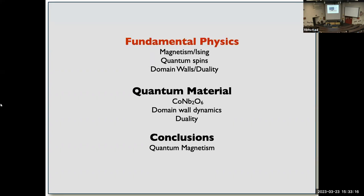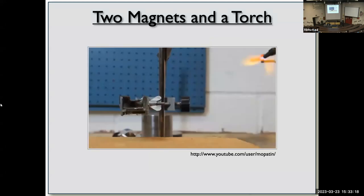Let's begin by watching a video of an experiment that is easy for all of us to appreciate. This experiment was probably done five or six hundred years ago for the first time — it's a very cheap experiment — and I'm going to argue that it is one of the most profound experiments of 20th century physics. The experiment involves two magnets and a blowtorch.